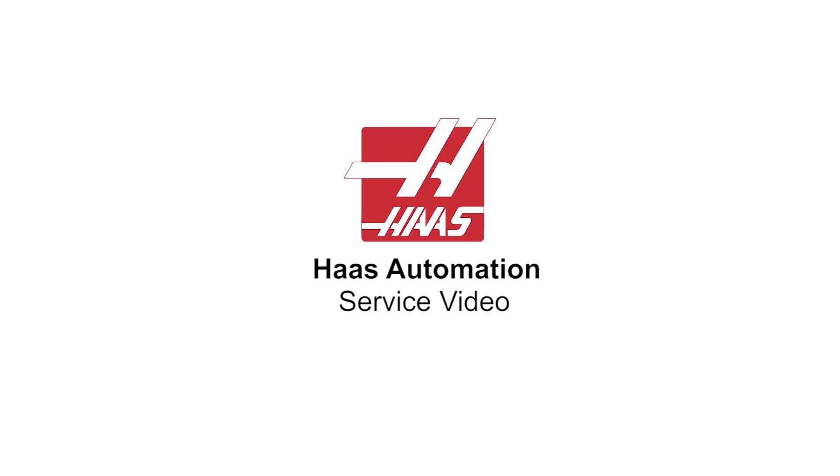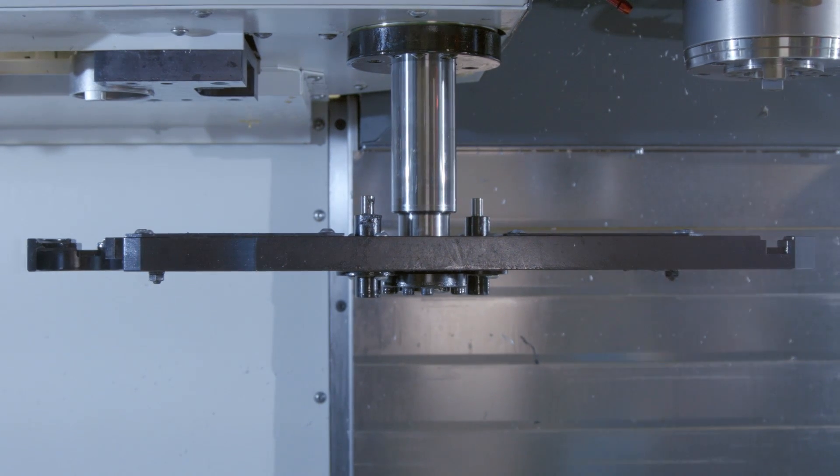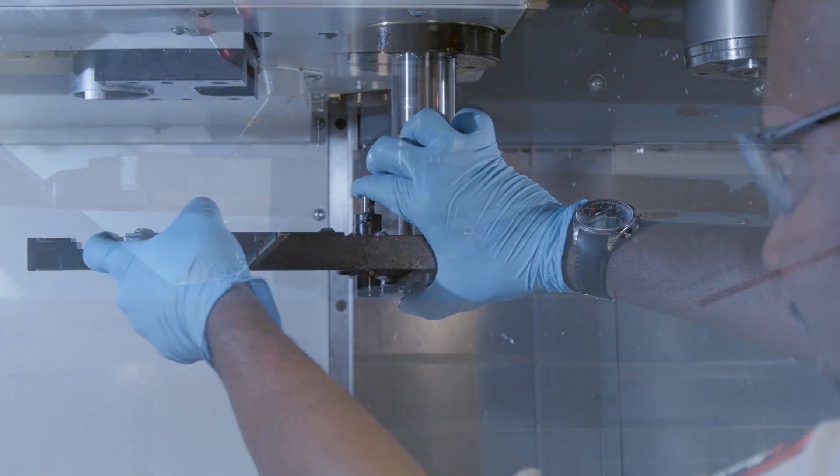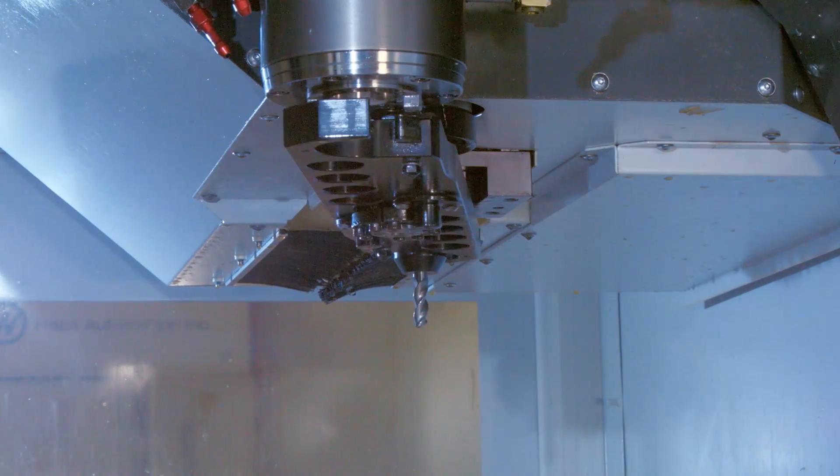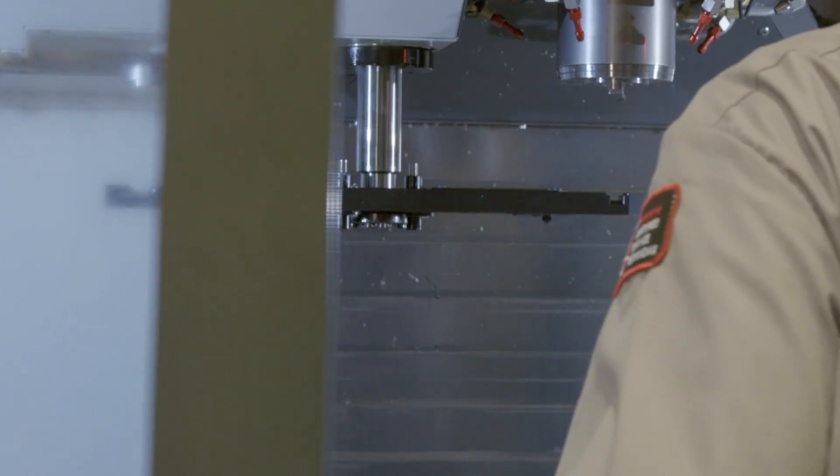Today we're going to perform routine maintenance on the side mount tool changer double arm assembly. Maintaining the double arm is important. It's one of the hardest working components on the machine. We're going to check and service the following components on the double arm.